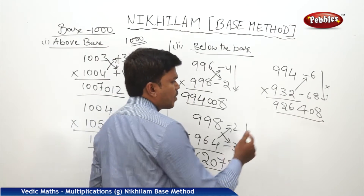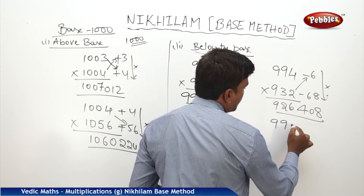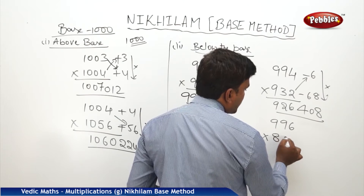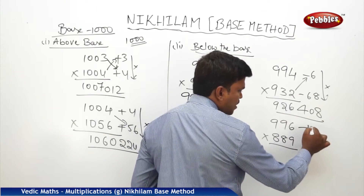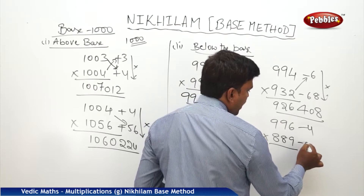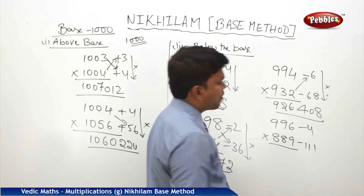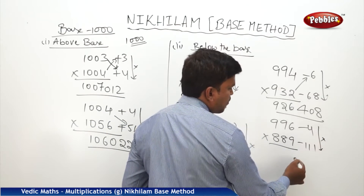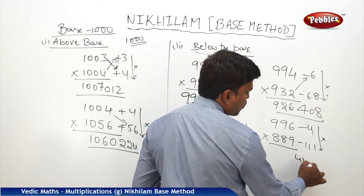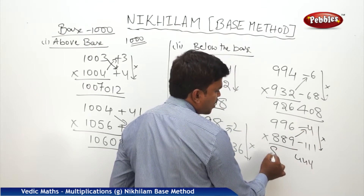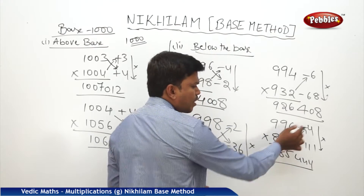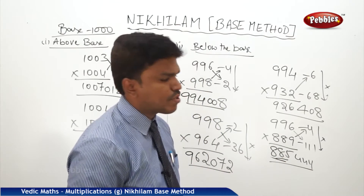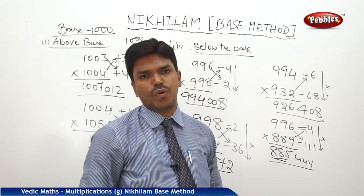One more example: 996 into 889. So this is minus 4 and this is minus 111. Multiply both: minus into minus is plus, so 4 times 111 is 444 — no problem. 889 minus 4 is 885. You can also do 996 minus 111 to get the same 885. So my answer is 885, 444.